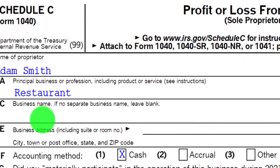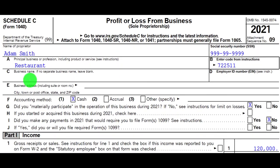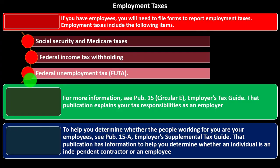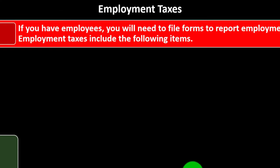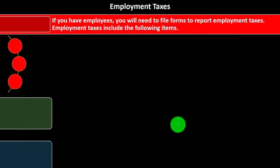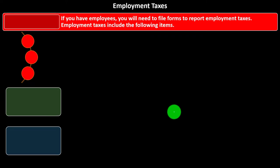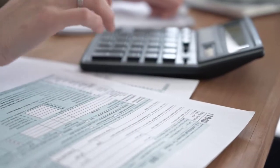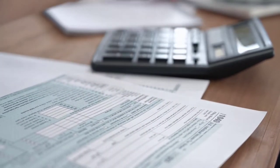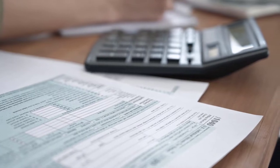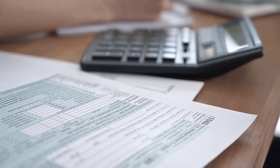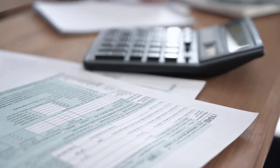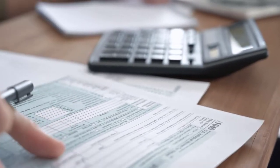This is the Schedule C, the profit and loss from business, which is basically an income statement. We're looking at employment taxes, and you might be saying we already went over the self-employment taxes — but that's different. Self-employment taxes are basically like the payroll taxes applied to you, in essence Social Security and Medicare applied to you. But you also might have employees.